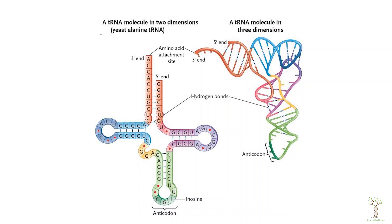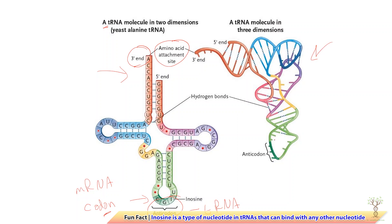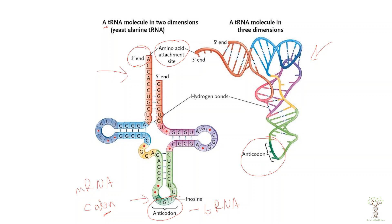If we took a transfer RNA molecule and ironed it out flat it would look like a single-stranded structure — remember RNA is single-stranded — but it folds in certain regions. The 3' end carries the amino acid, and at the other end we have the anti-codon sequence, which matches up with the codon. In reality tRNA folds into a more compact structure, but the key point is that the anti-codon must match the codon.